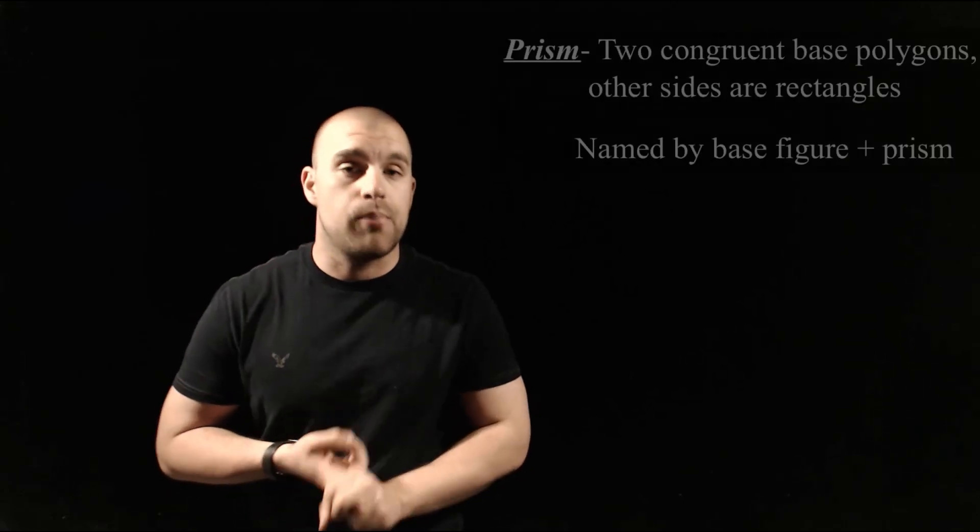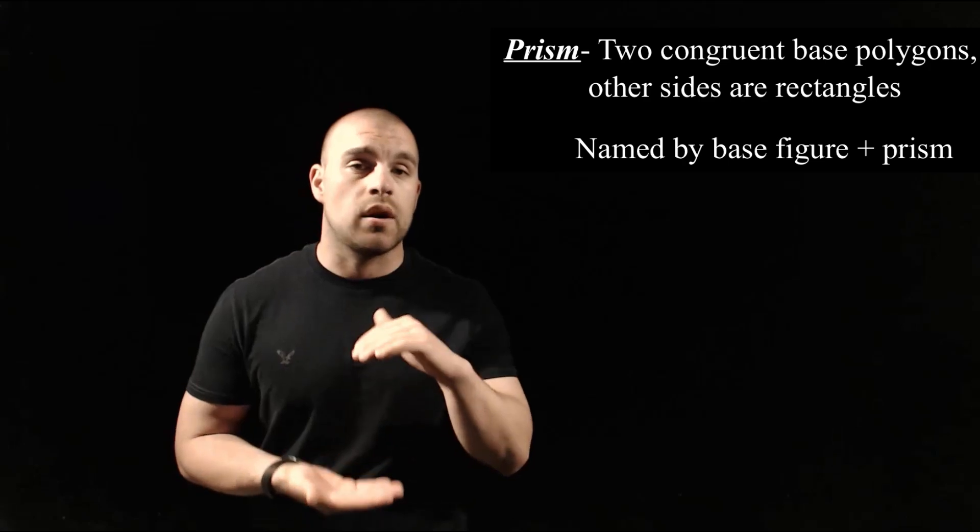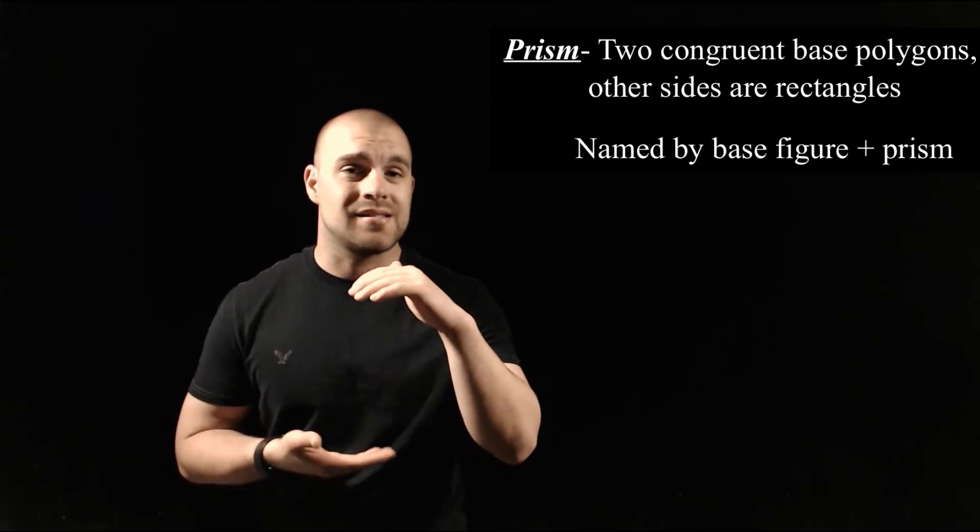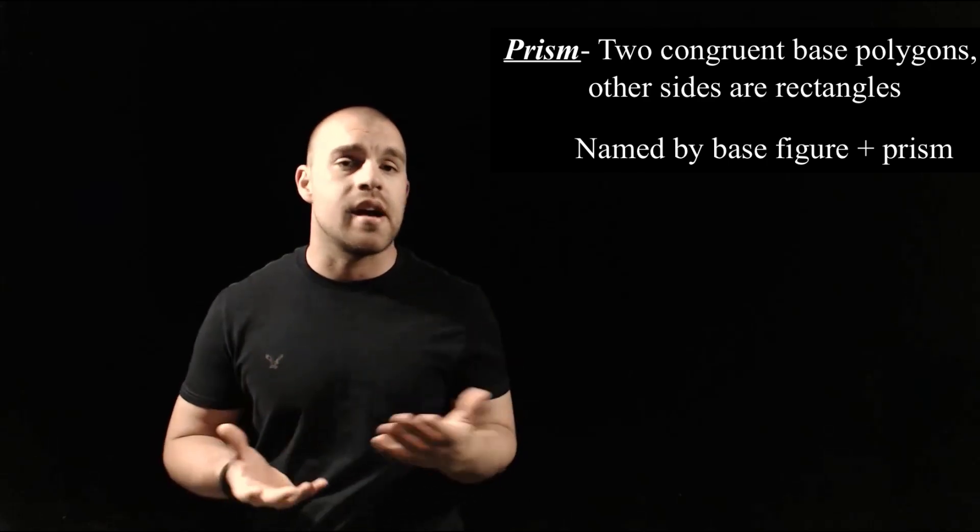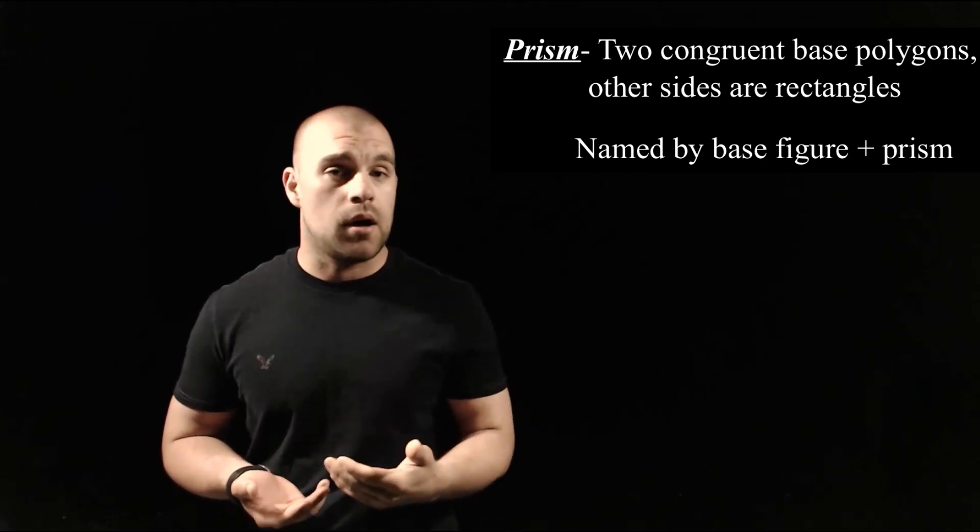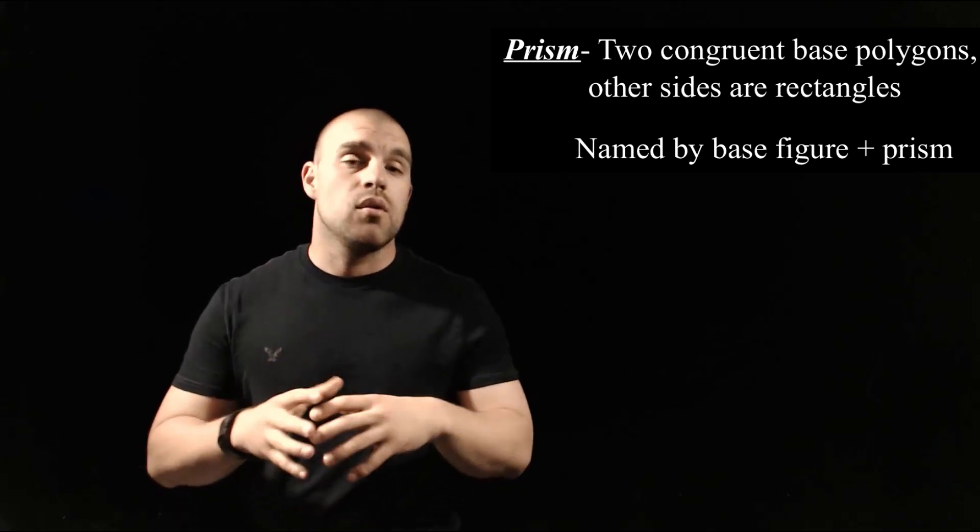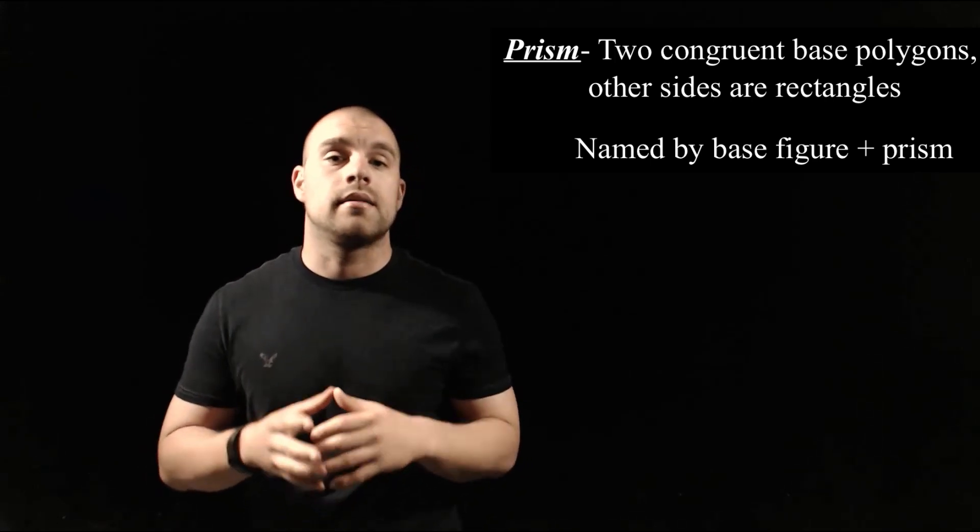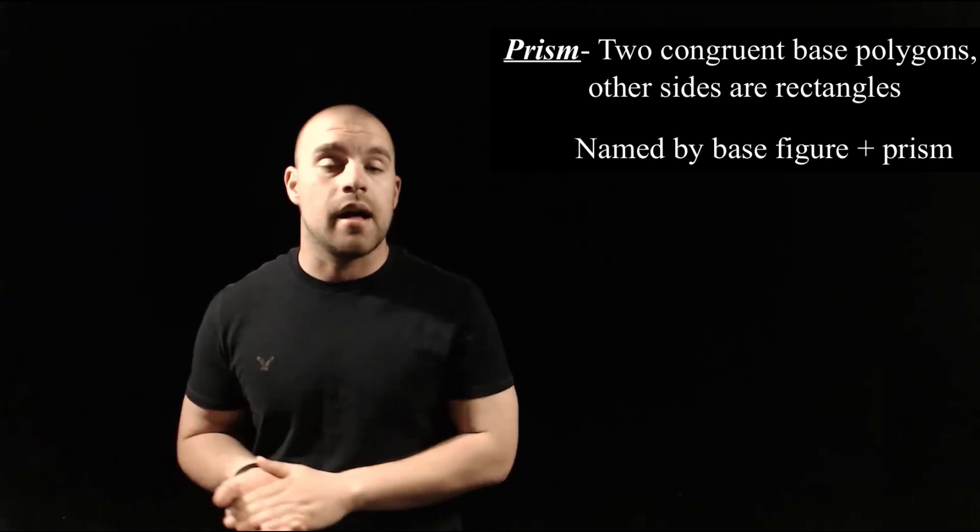There are two main kinds of polyhedra that we're going to deal with. The first one is a prism, and what happens with a prism is we have two congruent polygons working as the bases, so we can kind of think about those things as like the top or bottom of our figure. And then all the other faces or all the other sides of our polygon are made up of rectangles. As we're talking about these prisms, the way we name them is by taking a look at whatever base figure it is and then just add prism onto the end of it.